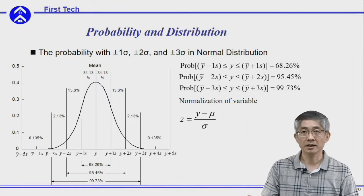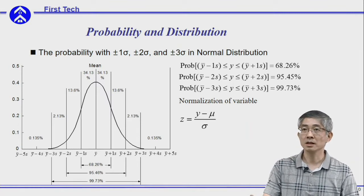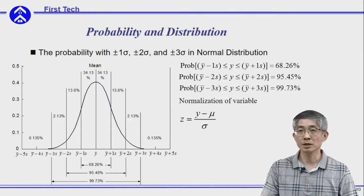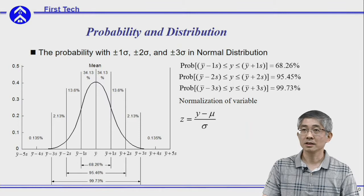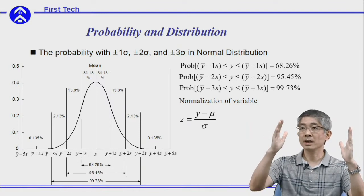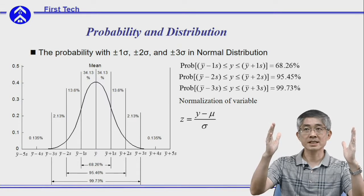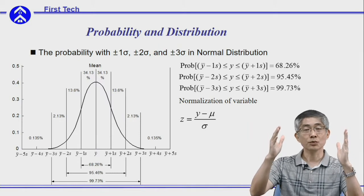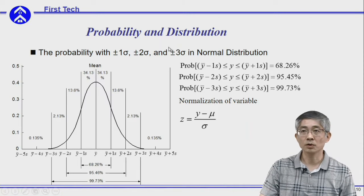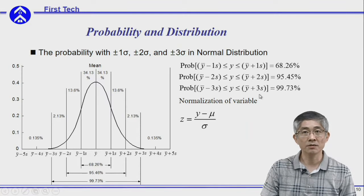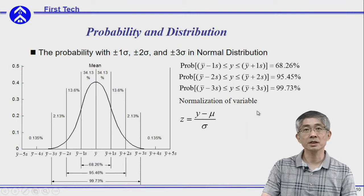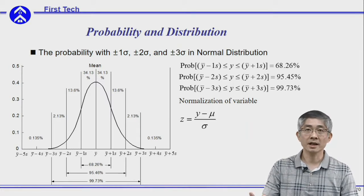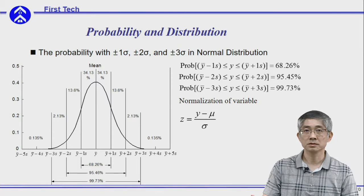Therefore, for a normal distribution with mean mu and standard deviation sigma, the probability of y within one times the standard deviation will be 68.26%, which is the same as the probability of z within 1 and minus 1. The same applies to y within two and three times the standard deviation. This is a very useful tool for understanding the distribution properties of a normal distribution.